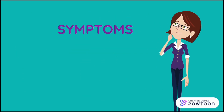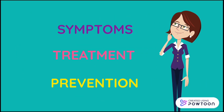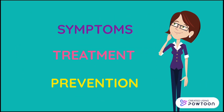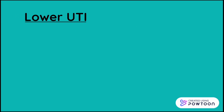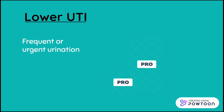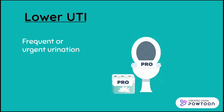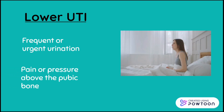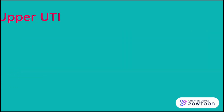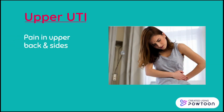Now let's discuss the symptoms, treatment options, and methods of prevention for UTIs. The symptoms for upper and lower UTIs are different. For lower UTIs, the symptoms include frequent or urgent urination, as well as pain or pressure above the pubic bone. Symptoms of upper UTIs typically happen alongside lower UTI symptoms and include pain and tenderness in the upper back and sides, fever, and chills.